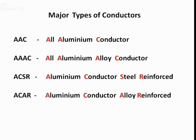Welcome friends. In this video we will go through various types of conductors used for transmission and distribution of electricity. There are four major types: All Aluminium Conductor (AAC), All Aluminium Alloy Conductor (AAAC), Aluminium Conductor Steel Reinforced (ACSR), and Aluminium Conductor Alloy Reinforced (ACAR).